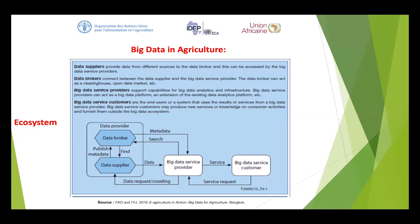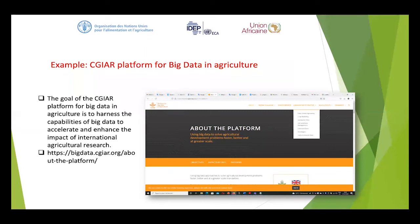I encourage each one of you to look at the diagram and understand how each of these players link with each other in regard to big data in agriculture. We have an example of the CGIAR platform for big data in agriculture. For those who don't know, CGIAR is a very large consortium with platforms for big data in agriculture. The goal of the CGIAR platform is to harness the capability of big data to accelerate and enhance the impact of international agricultural research. You can check out that big data platform at bigdata.cgiar.org/about-the-platform.